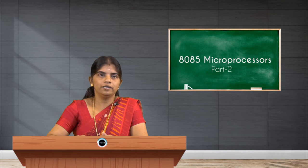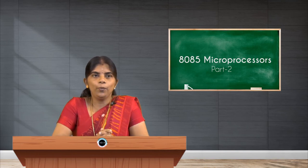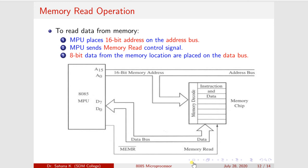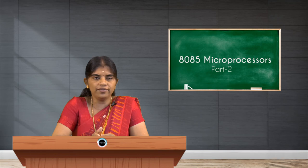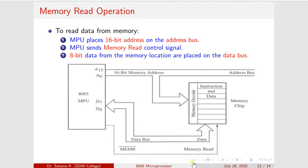Here is the diagram for the memory read operation. There is a processor — the 8085 MPU — though any MPU can be used to communicate with memory. Here I am using the 8085 as the processor. In the 8085, there is a 16-bit address bus and an 8-bit data bus. The size of the address bus and data bus varies with the processor.